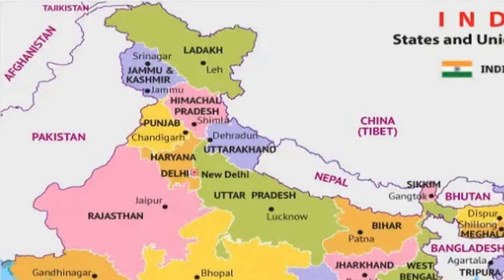So these are five states — actually two Union Territories now, as previously Jammu and Kashmir was a state. You have the Union Territories of Ladakh and Jammu and Kashmir on the top, then Himachal Pradesh, then Punjab, then Haryana, and on the right touching Nepal is Uttarakhand.